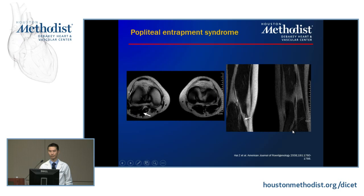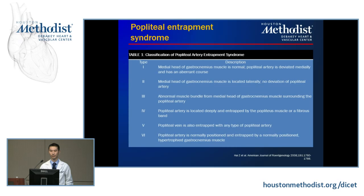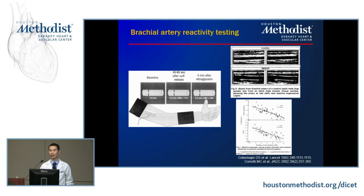Popliteal entrapment syndrome occurs when tendons are arranged in a configuration that traps arteries, veins, and nerves, leading to calf ischemia — there's a classification scheme behind it. There's also endothelial reactivity testing done through BART — brachial artery reactivity testing — where the arm is compressed with a blood pressure cuff, released, and the increase in diameter measured 45–60 seconds afterwards. For maximal vasodilation, nitroglycerin is administered.